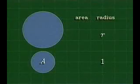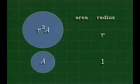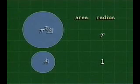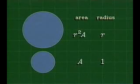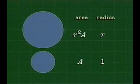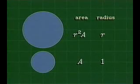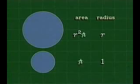The area of a circular disk is some number times the square of its radius. This factor A is another fundamental constant of nature. Surprise! It's the same number pi.